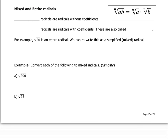Continuing the review, we're going to look at something called mixed and entire radicals. Entire radicals are radicals without coefficients — all the content is found inside the radical. Mixed radicals are radicals with coefficients; these are also called simplified.